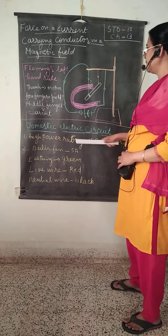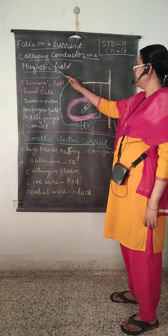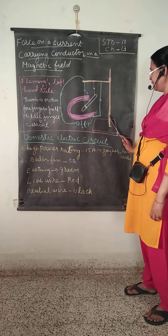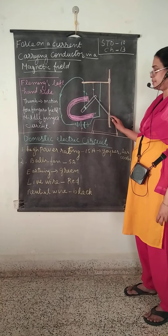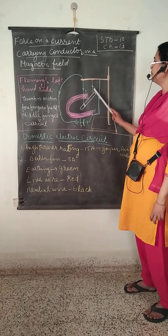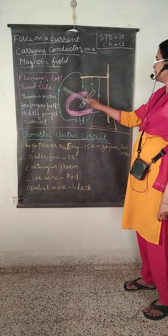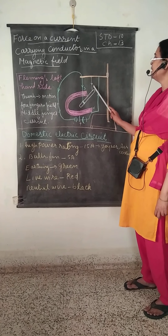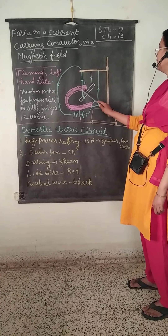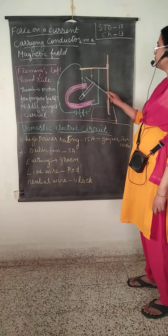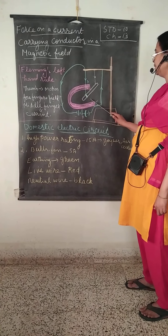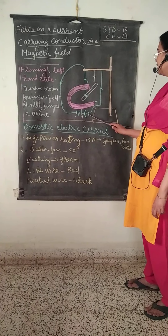Now we will discuss the force on a current-carrying conductor in a magnetic field. There is a stand with an aluminum strip that is hung horizontally, connected with two conducting wires. There is a horseshoe-shaped magnet with the north pole down and south pole up, attached near this aluminum rod.